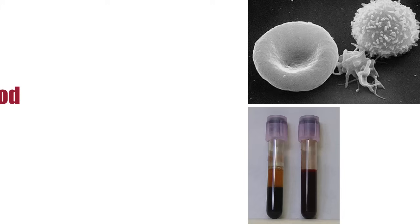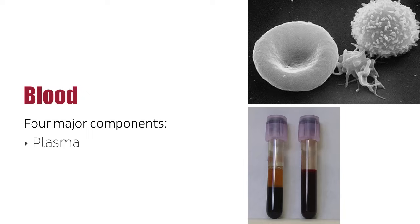The blood is made up of four major components. The plasma is the fluid that surrounds the blood cells and helps transport carbon dioxide, hormones, and metabolic waste products.